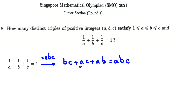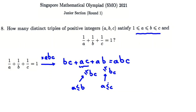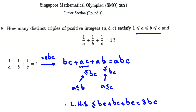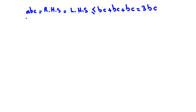We consider each part. Because A ≤ B, we can replace A with B, so AC ≤ BC. Similarly, because A ≤ C, we have AB ≤ BC. So the left-hand side BC + AC + AB is less than or equal to BC + BC + BC = 3BC. Since the left-hand side equals ABC, we get ABC ≤ 3BC.